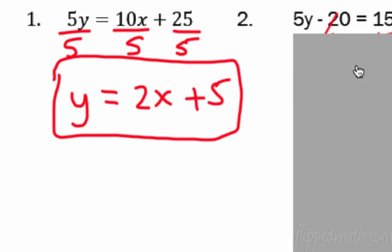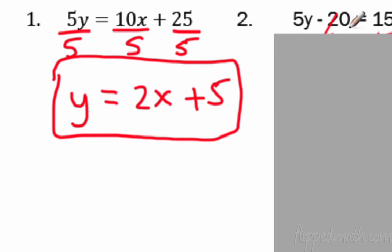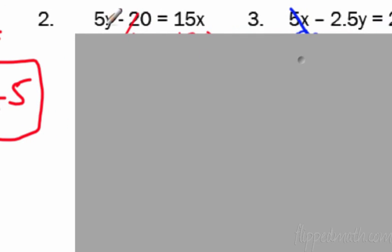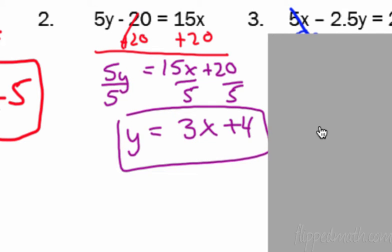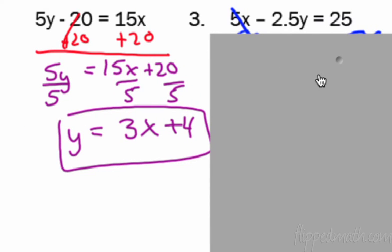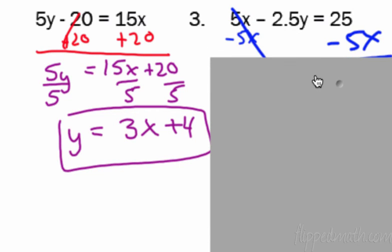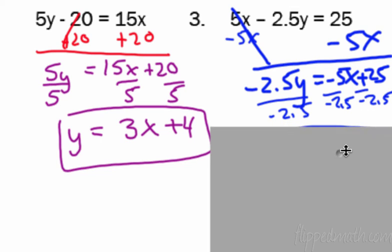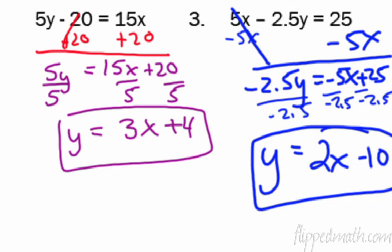For number 2, you have to get rid of the minus 20 first — the opposite is plus 20, so add 20 to each side. Remember those don't combine because they're not like terms. Then divide each side by 5. You get Y equals 3X plus 4. For number 3, subtract 5X — that's a positive 5X so the opposite is to subtract 5X from each side. They're not like terms, so write negative 5X plus 25. Then divide by negative 2.5, and you get Y equals 2X minus 10.